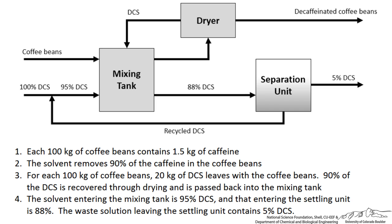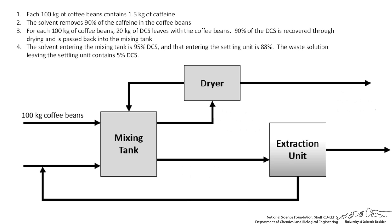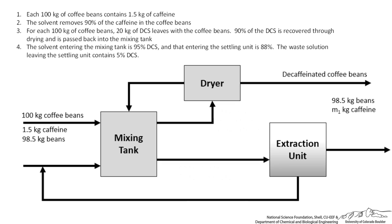A good place to start with any material balance is to fill in all known and unknown variables on each stream. Starting with a basis of 100 kg of coffee beans, we know 1.5% is caffeine, so we write 1.5 kg of caffeine and 98.5 kg of beans. Since 90% of caffeine is removed, 10% remains, meaning 0.15 kg of caffeine leaves with the beans. The beans themselves, 98.5 kg, pass through unchanged. We can set the unknown caffeine in the bean exit stream equal to M1, which equals 0.15 kg.